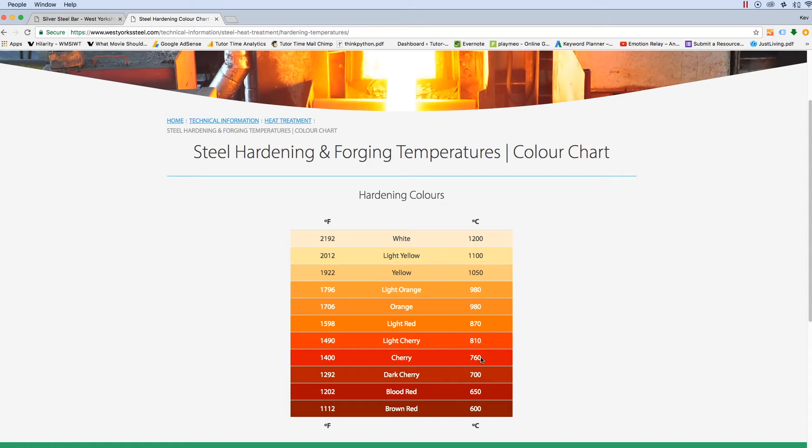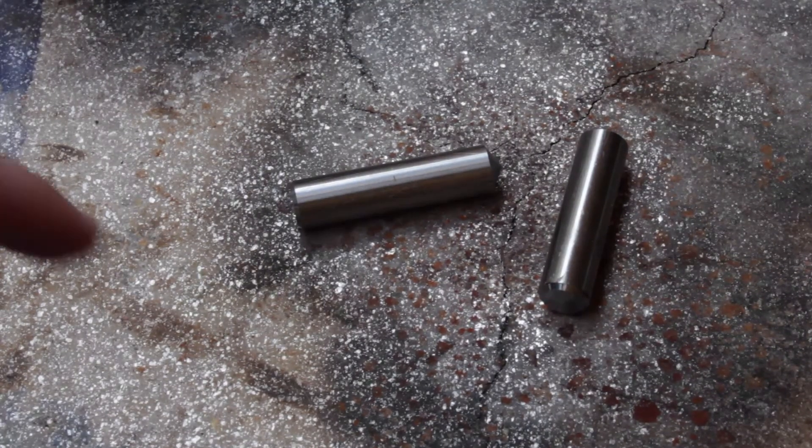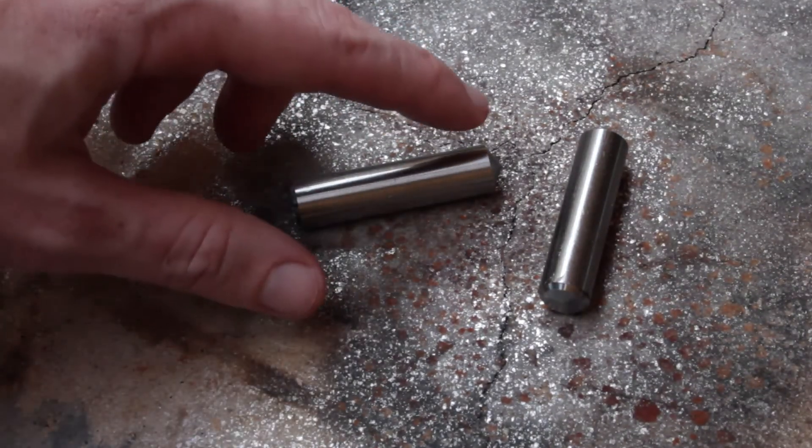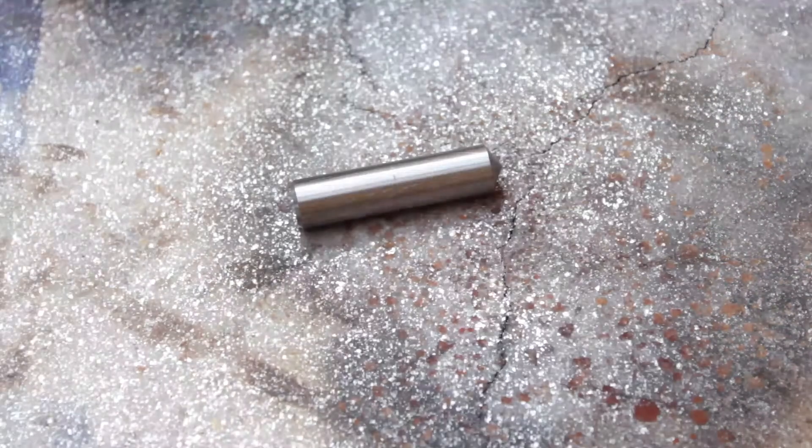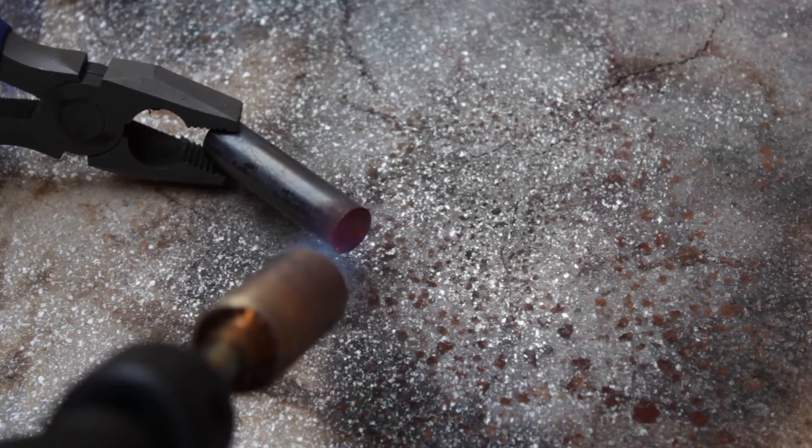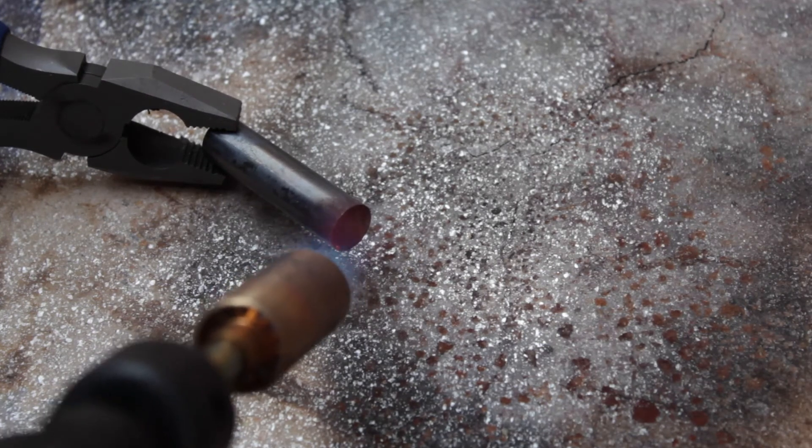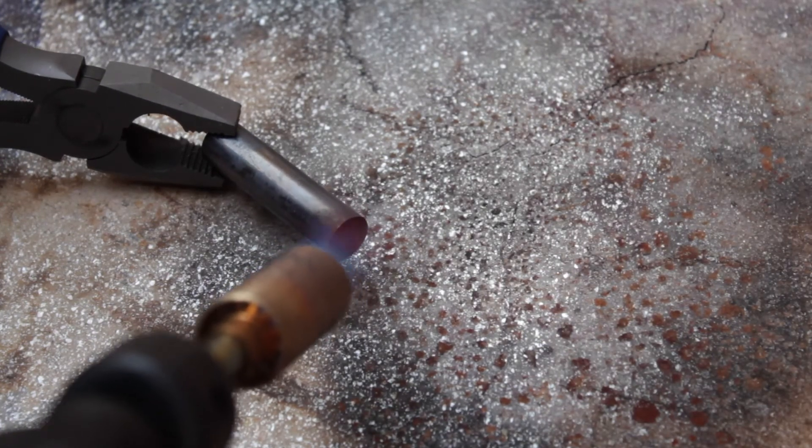So now we need to harden the tip. According to our color chart, we need to get that to 770 degrees, which is red. Now we've got it glowing at a red—that's going to be about 760-770 degrees—and we now need to quench in the water.